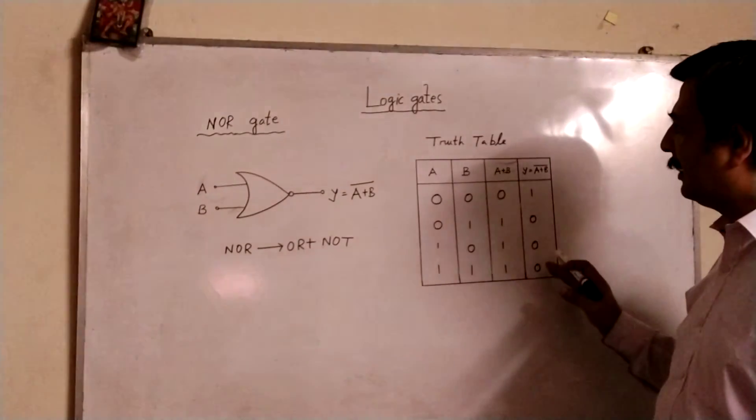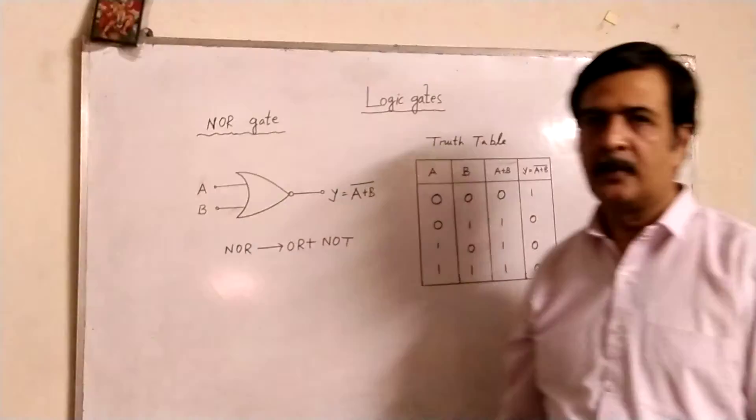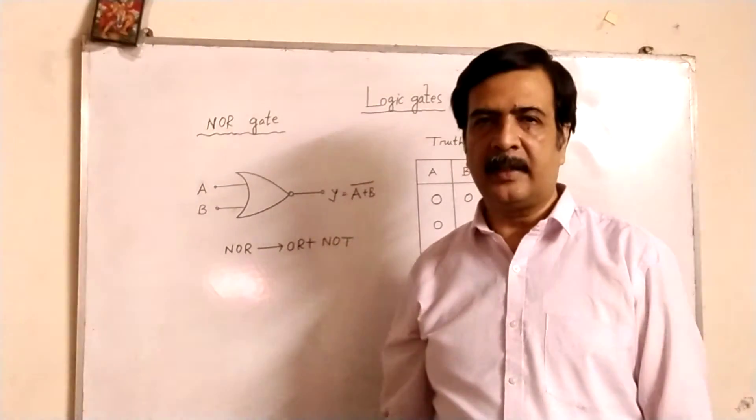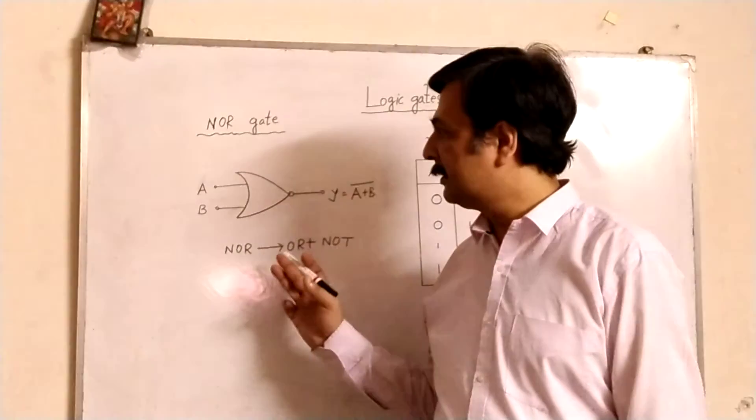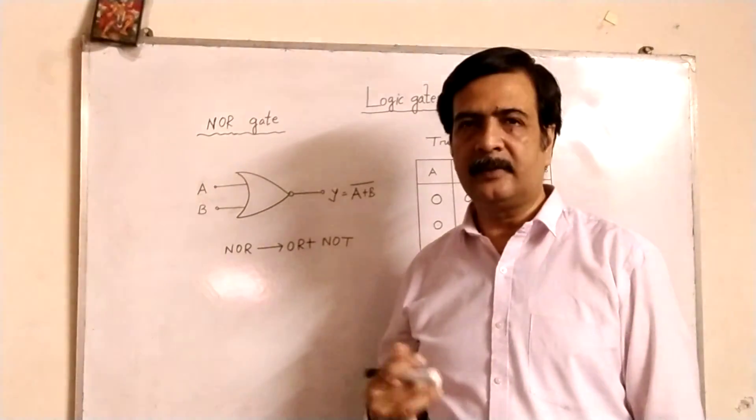So, that is the output of the NOR gate. Hope you have understood. In exam, you will get the circuit symbol and the truth table that you have to write.